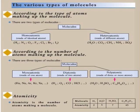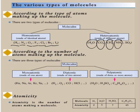According to the type of atoms making up the molecule, there are two types: homoatomic and heteroatomic. Homoatomic molecules are made up of identical atoms — examples: H₂, N₂, O₂, F₂, Cl₂, Br₂, I₂. Heteroatomic molecules are made up of different atoms — for example H₂O (hydrogen and oxygen), CO₂ (carbon and oxygen), CH₄ (carbon and hydrogen), NH₃, SO₂.